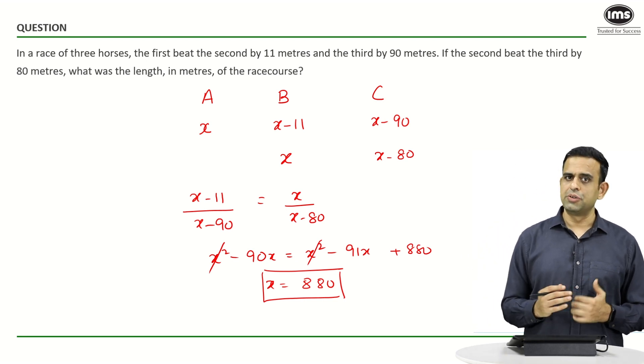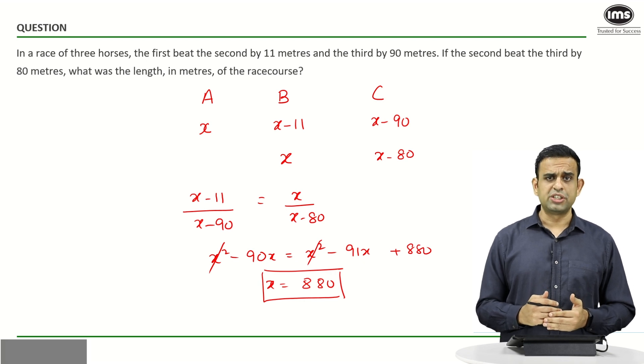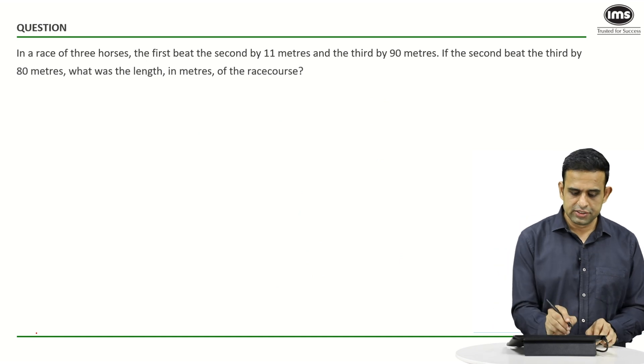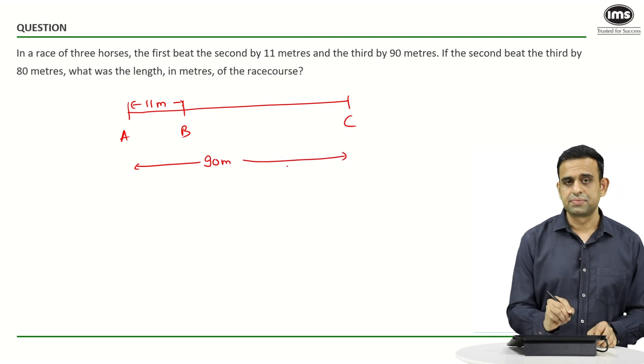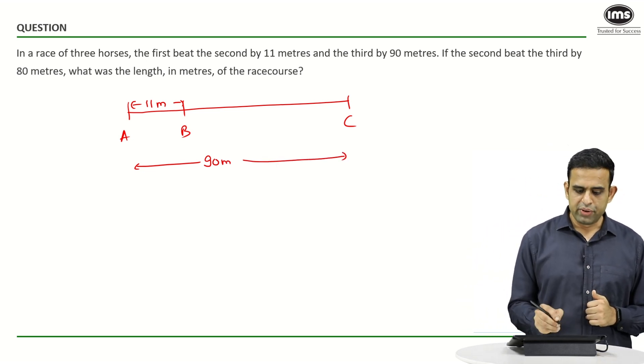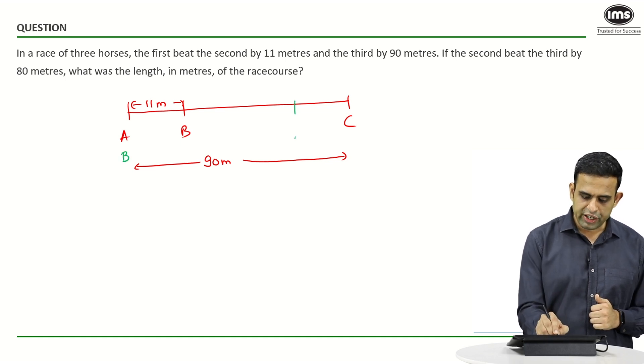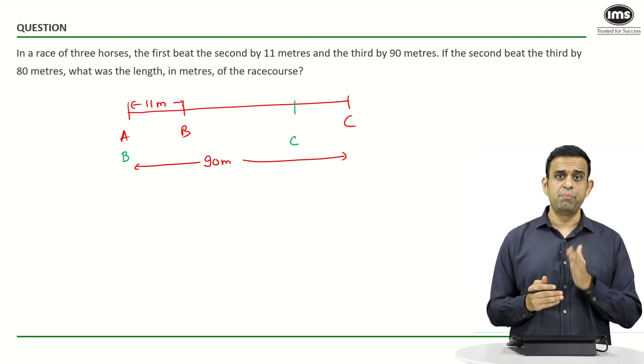Since X was taken as the length of the race, my answer for this question will be 880. Let us now look at another way to solve this question without taking any variable into account. In the second method, when A completes the race, B was 11 behind and C was 90 meters behind A. When B reaches the finishing line, C is over here.